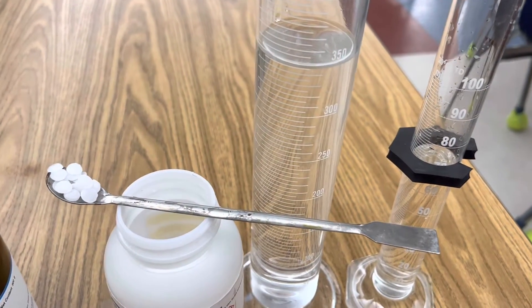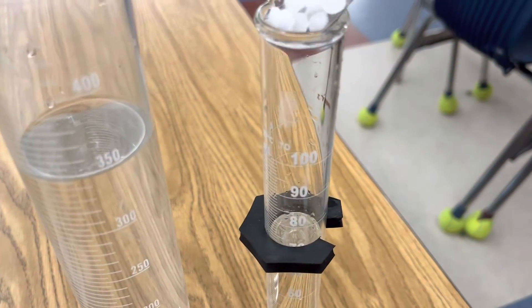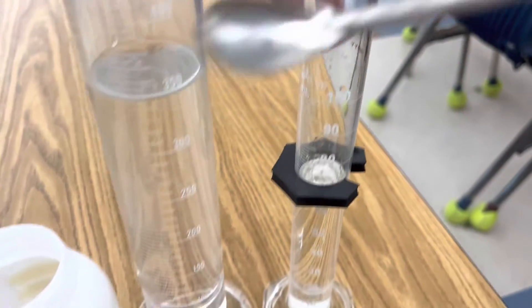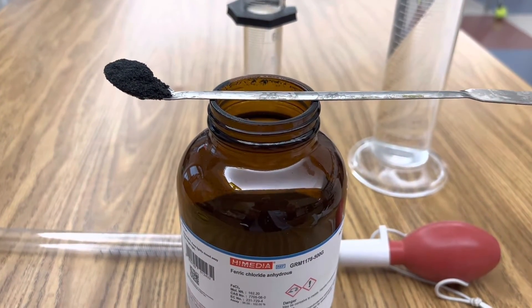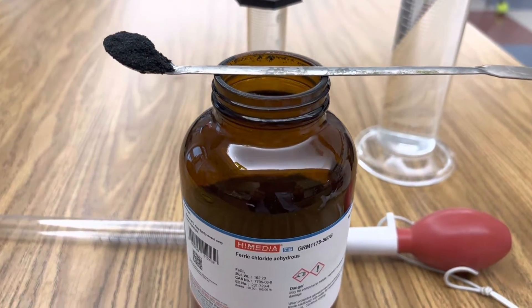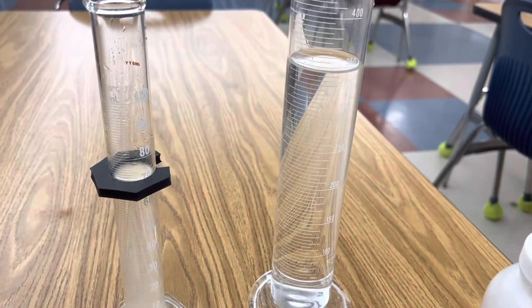First I'll create an aqueous solution of sodium hydroxide by adding 8 grams of sodium hydroxide to 70 milliliters of distilled water. Next, create an aqueous solution of ferric chloride by adding 12 grams of ferric chloride to 350 milliliters of distilled water.